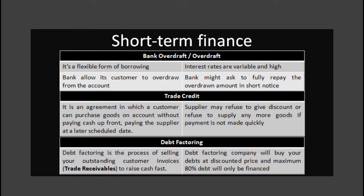Let's look at short term finance in detail, starting with bank overdraft. Most businesses will have an overdraft agreement with their bank, which allows them to withdraw a sum of money from their account greater than the balance in their account. This is a very flexible source of finance because businesses can change the amount of borrowing at short notice depending on their needs. However, the cost of this borrowing is often higher than most other sources, so overdrafts are usually used only to meet short term cash shortages.